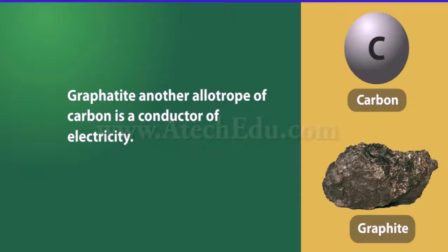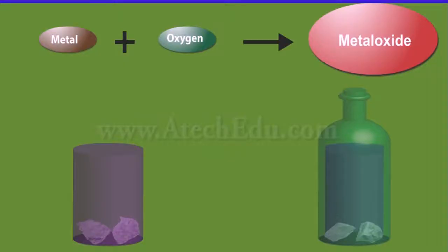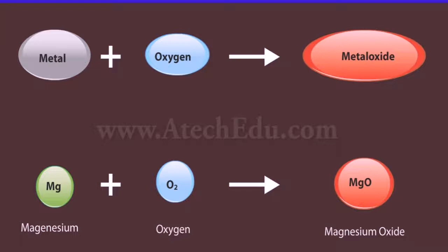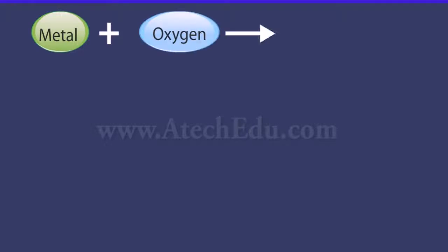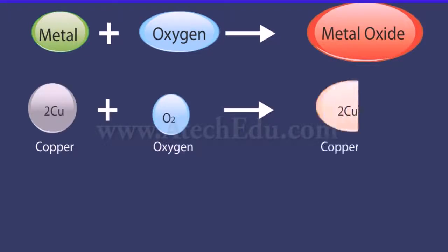Alkali metals like lithium, sodium, and potassium are so soft that they can be cut with a knife. Different metals show different reactivities towards oxygen. Metals like potassium and sodium are highly reactive and are kept in kerosene oil to prevent them from catching fire. Magnesium burns in air with a dazzling white flame. Metals combine with oxygen to form metal oxides. Copper reacts with oxygen to give copper oxide, which is a black oxide. Similarly, aluminium forms aluminium oxide.